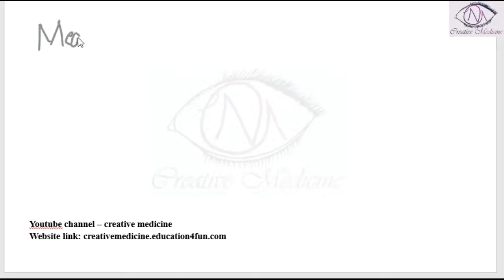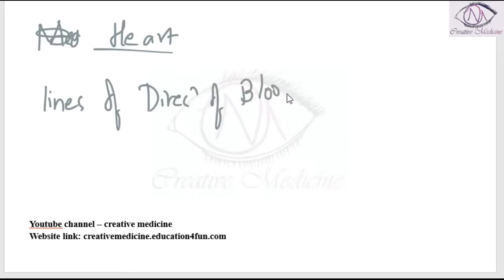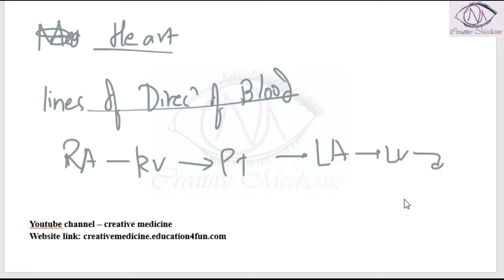The heart is dissected along the lines of direction of blood — the inflow and outflow method. Start the opening of the heart from the right atrium, then to the right ventricle, and come out of the heart through the pulmonary trunk. Again enter the heart through the left atrium, left ventricle, and come out through the aortic trunk.